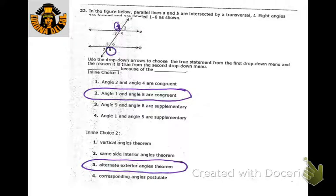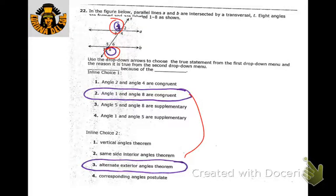Same kind of angle relationship with parallel lines: angles 1 and 8 are alternate exterior angles, so they are congruent — that's why we pick those two.